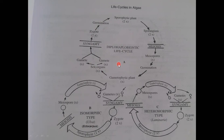This life cycle is either isomorphic — where gametophytic and sporophytic generations are similar in structure — or heteromorphic, where the gametophytic plant is very small and microscopic while the sporophytic plant is large. This concludes the discussion on sexual reproduction and life cycle in brown algae. Thank you for watching; see you next time with a new lecture.